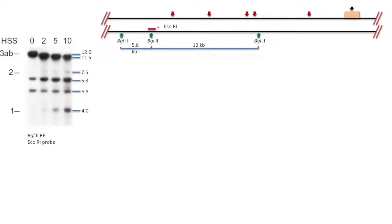Let's look at the first lane where DNase was not used. We see three bands that are 12, 6.8, and 5.8 kb. We know none of them is any of the hypersensitive sites. Can you guess why? It is simply because we didn't use any DNase, and we saw where 12 and 5.8 are from.